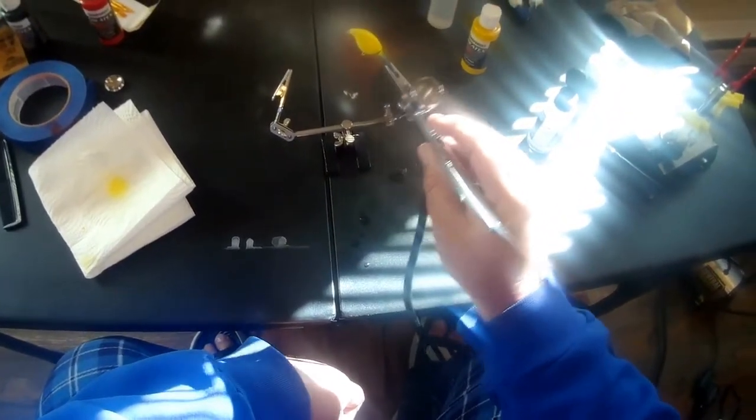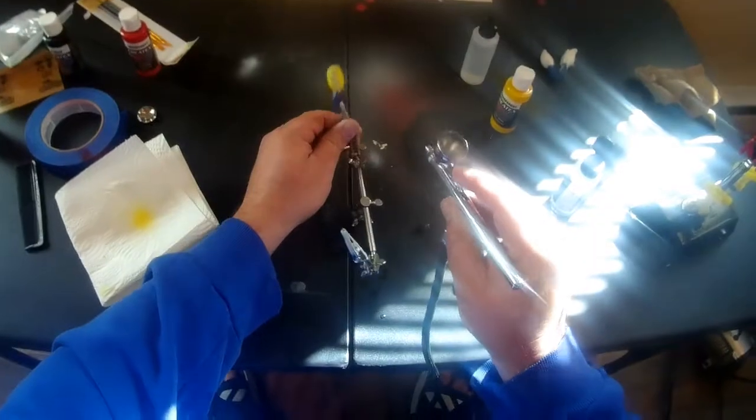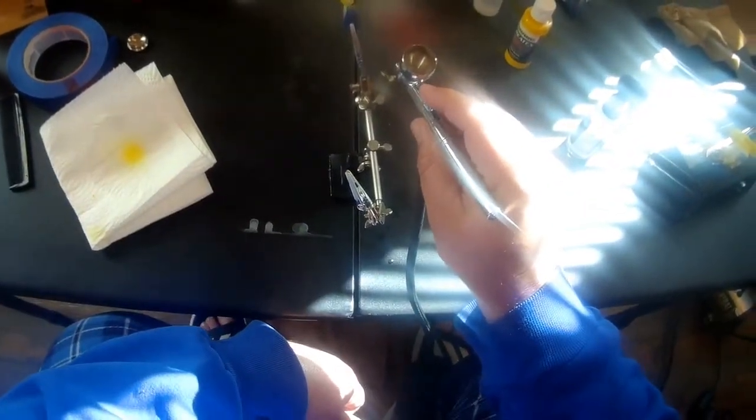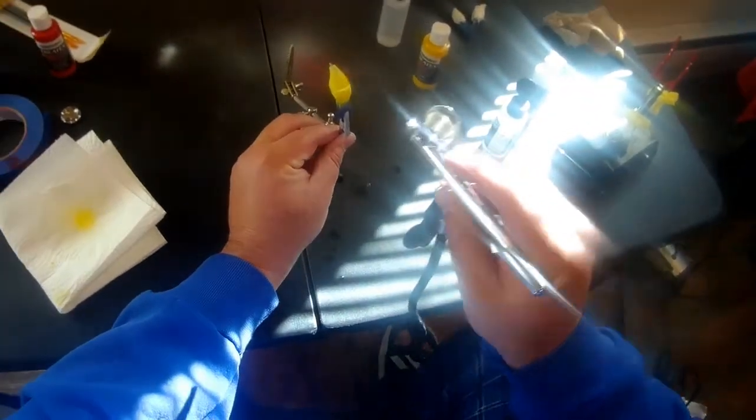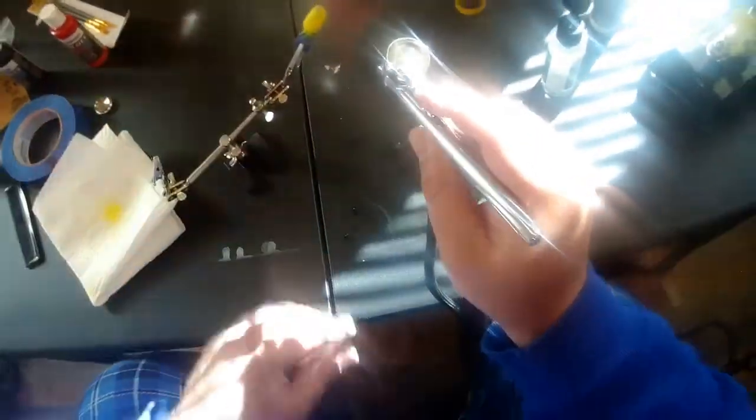So I started out with a base layer of white, and then I sprayed two coats of this golden yellow color, this bright yellow color, over the base layer of white.